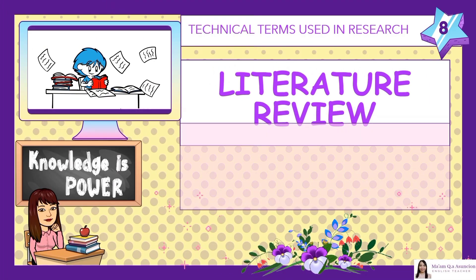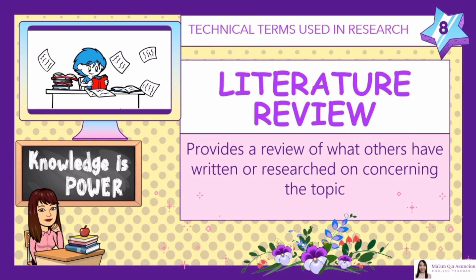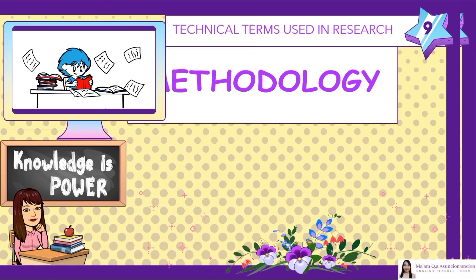Number 8: Literature Review. Provides a review of what others have written or researched on concerning the topic. A literature review surveys books, scholarly articles, and any other sources relevant to a particular issue, area of research, or theory, and by so doing provides a description, summary, and critical evaluation of these works in relation to the research problem being investigated. Literature reviews are designed to provide an overview of sources you have explored while researching a particular topic, and to demonstrate to your readers how your research fits within a larger field of study.